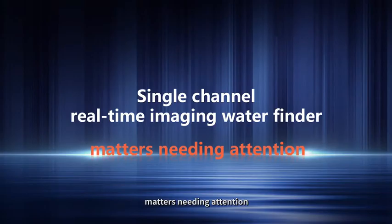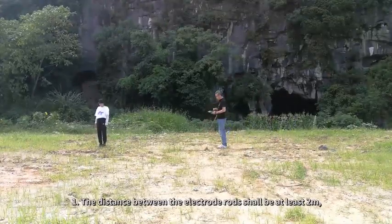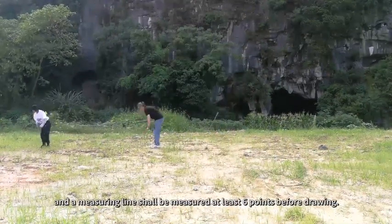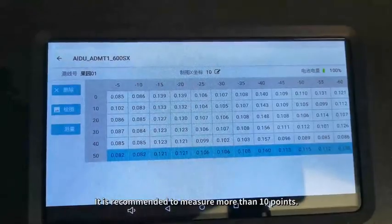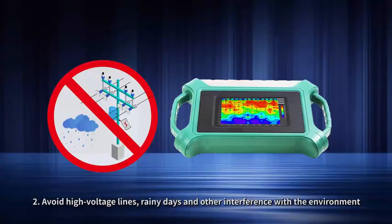Matters needing attention: The distance between the electrode rods shall be at least 2 meters, and a measuring line shall be measured at least 6 points before drawing. It is recommended to measure more than 10 points. To avoid high voltage lines, rainy days, and other interference with the environment could be better.